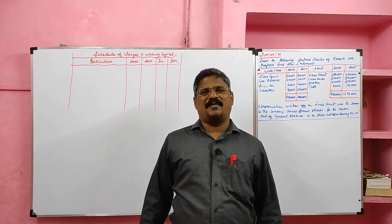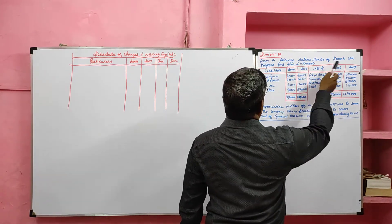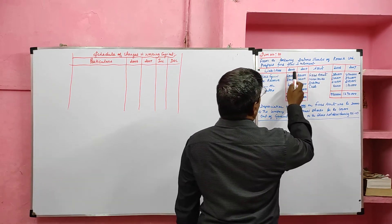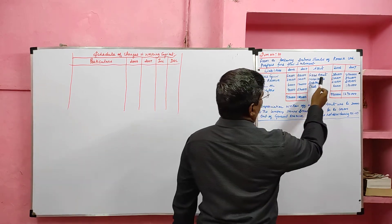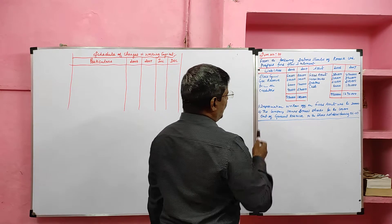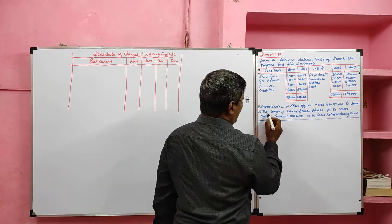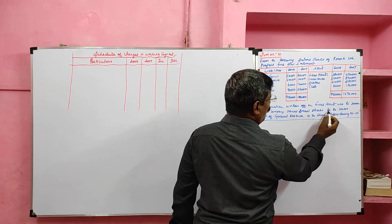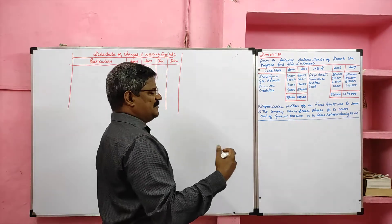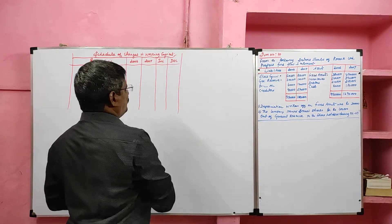Let me prepare the 10th comprehensive problem on fund flow statement. From the following balance sheet of Konark Limited, prepare a fund flow statement. Liabilities and assets for 2006 and 2007 are given — asset side includes fixed assets, inventory, debtors, and cash; liability side includes share capital, general reserve, profit and loss account, and creditors. Adjustments: depreciation on fixed assets, and the company issued bonus shares for 1 lakh out of general reserve to shareholders. So we have adjustments for fixed assets, general reserve, and share capital.